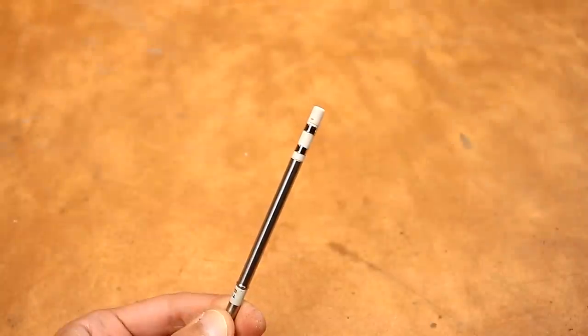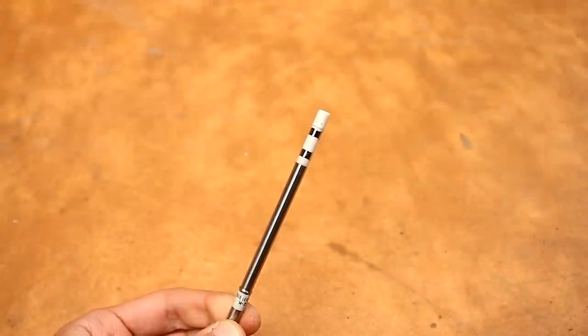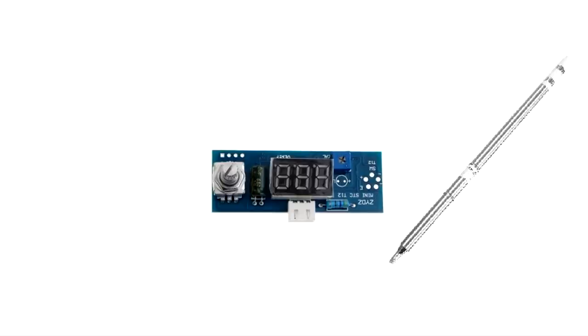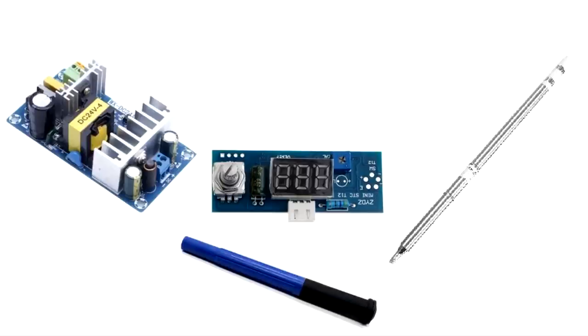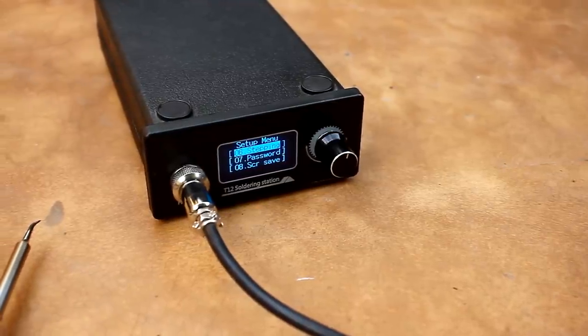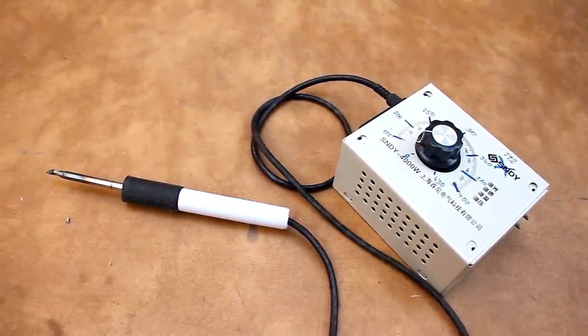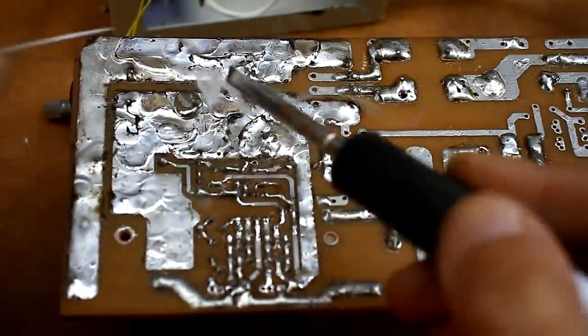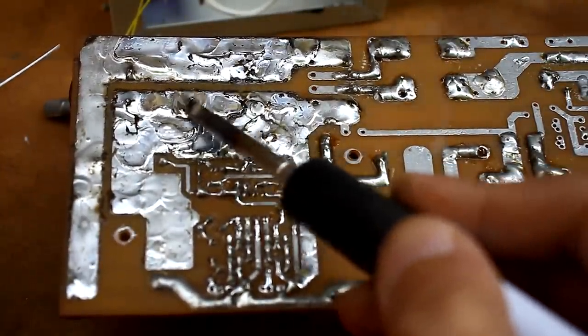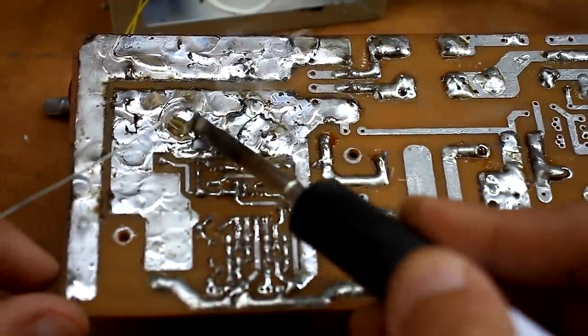Of course, for a very reasonable price you can buy a digital controller, a tip, a handle, a power source and assemble the station from ready-made modules. You can also buy all this already assembled or spending a day make an analog version, which will be almost no worse than a digital one with PWM control.